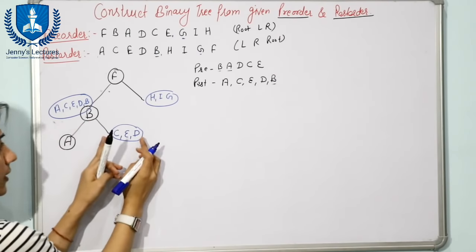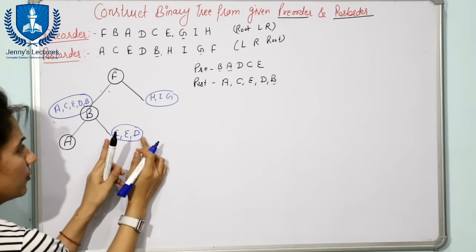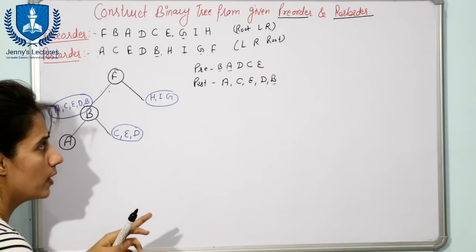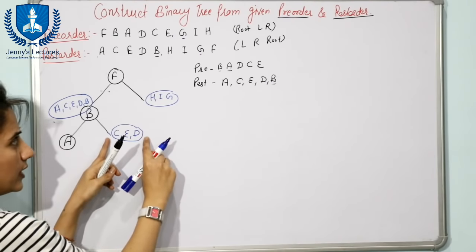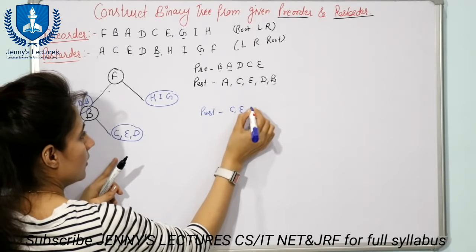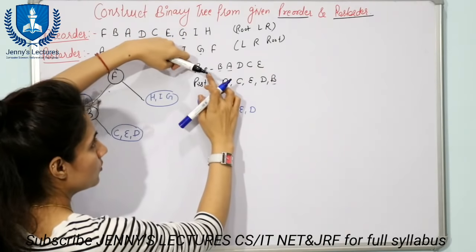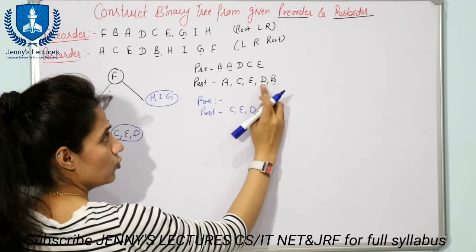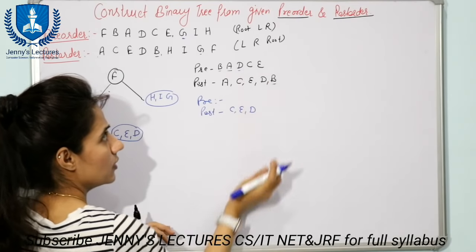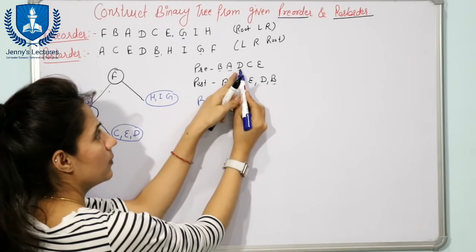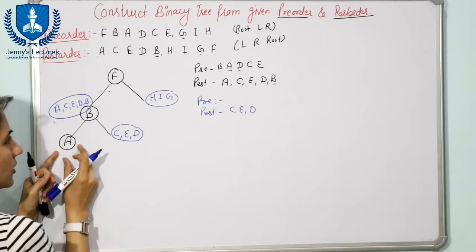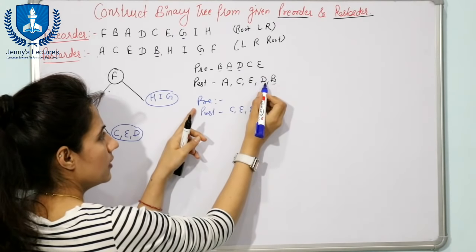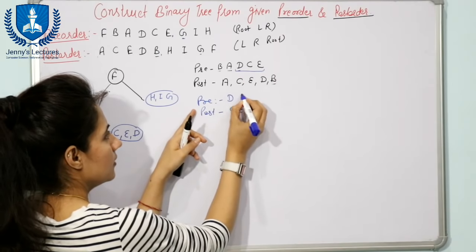The left child A sub-problem is complete. For the right sub-problem of B, post-order is C, E, D and we need the corresponding pre-order. Apply the predecessor rule: find predecessor of B's root in post-order, which is D. Find D in pre-order, and take elements before D - which is A, already taken. So the pre-order for this sub-problem is D, C, E.